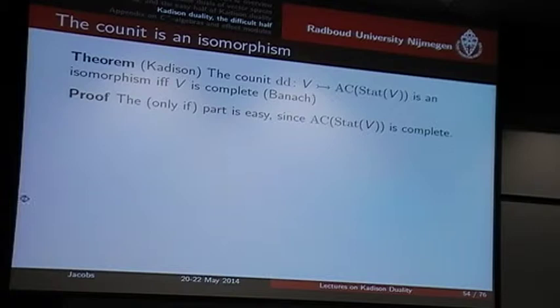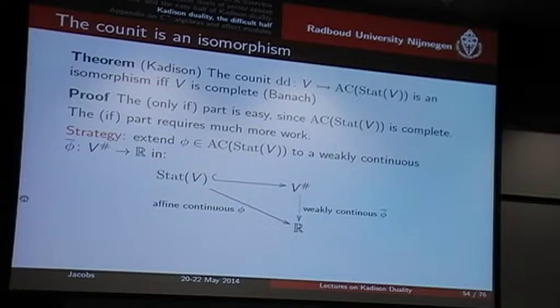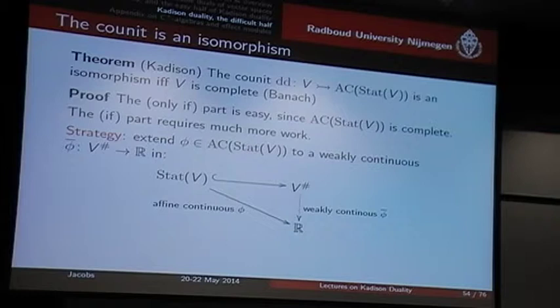In the other direction, you have to do more work, and the strategy is as follows. Suppose I have an element here — a phi — which is an affine continuous function on the states. I want to show that this map is an isomorphism, so I have to find the vector v where this phi comes from. Now, phi works on states to the real numbers, and it's affine and continuous.